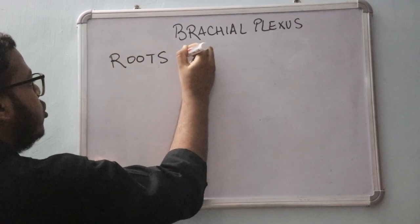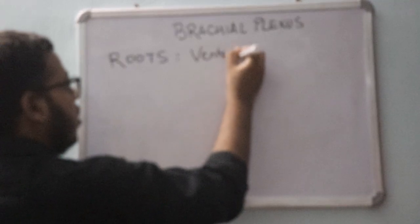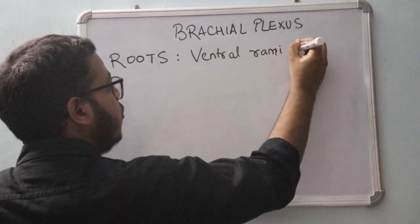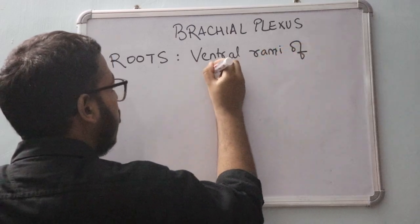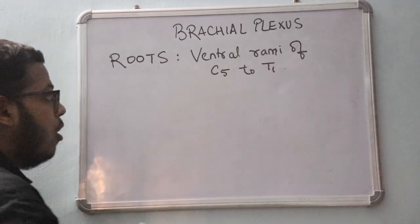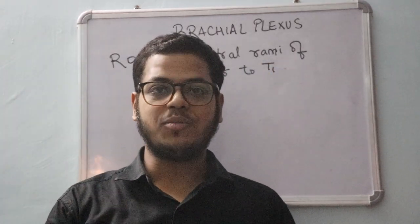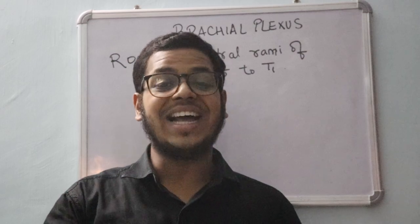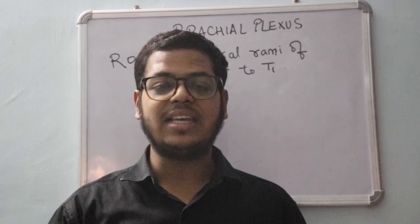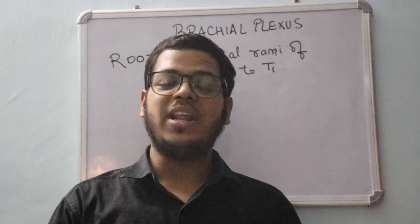Roots are actually the ventral rami of the spinal nerves from C5 to T1. The brachial plexus also gets contribution from C4 as well as T2. Depending upon which contribution is more, we will have three types of brachial plexus: prefixed, postfixed, and fixed.